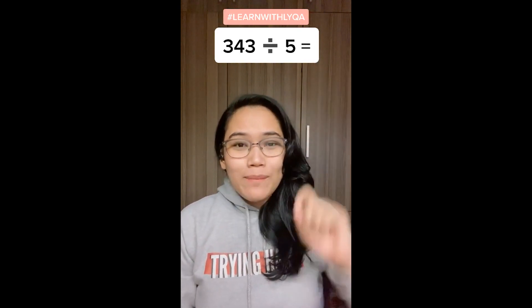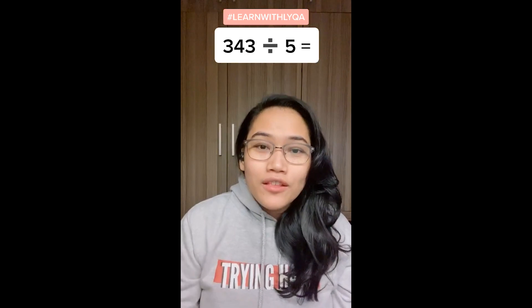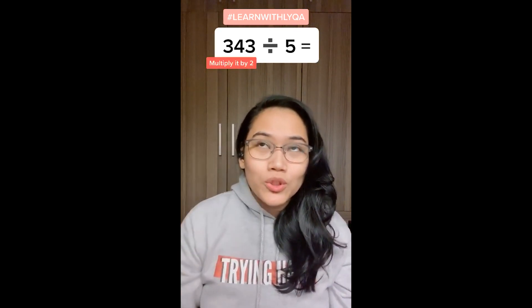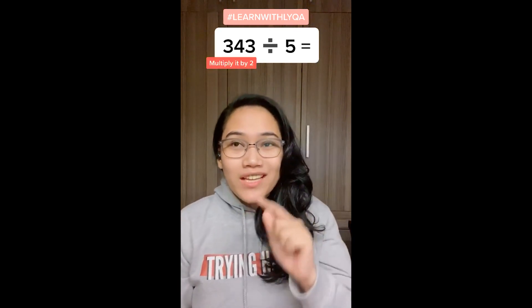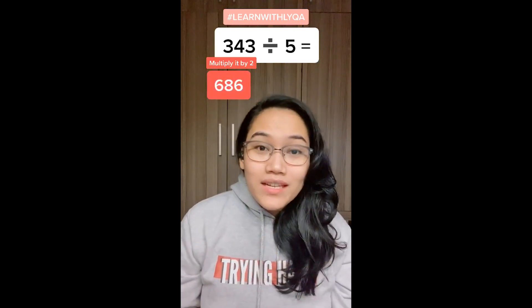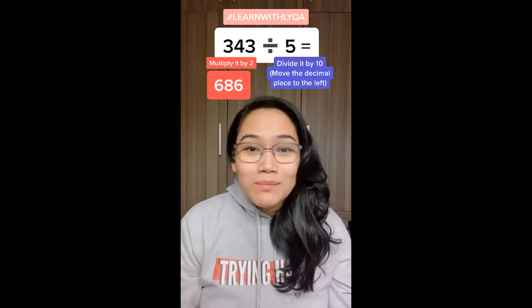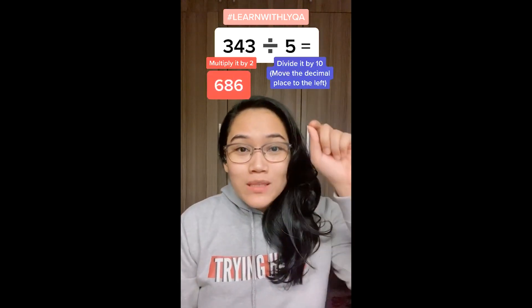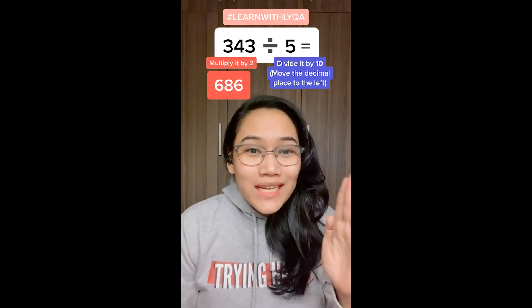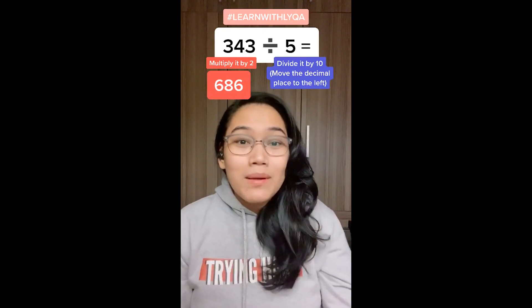Let's take our example: 343. The first thing that you're going to do is to multiply it by 2. So, 343 times 2 is 686. And then step 2, igagalaw mo lang yung decimal place ng one spot from right to left. So, yung 686 ay magiging 68.6. And that is your answer.